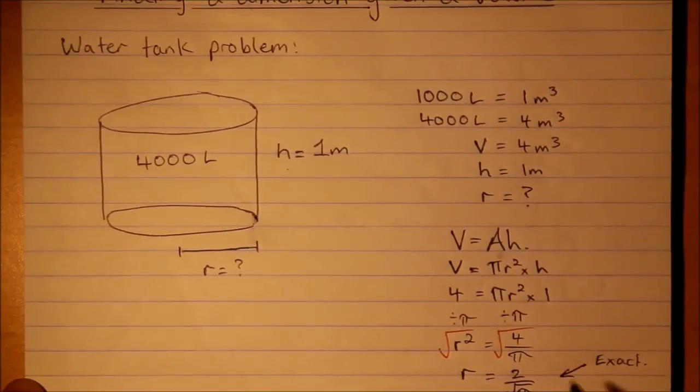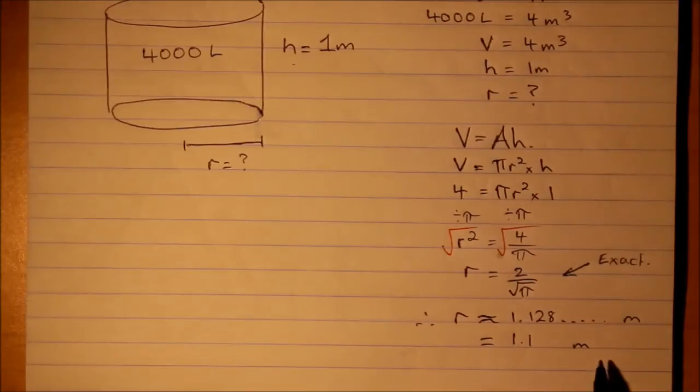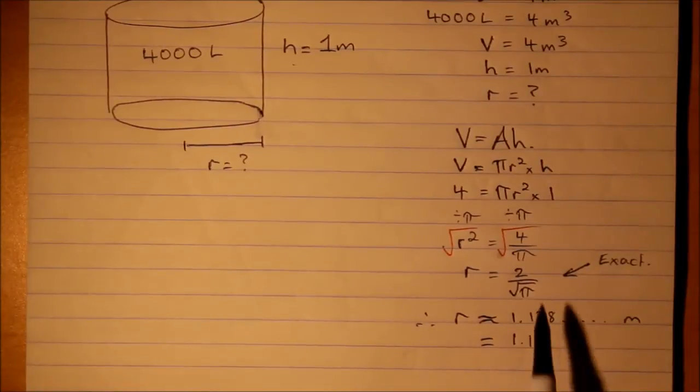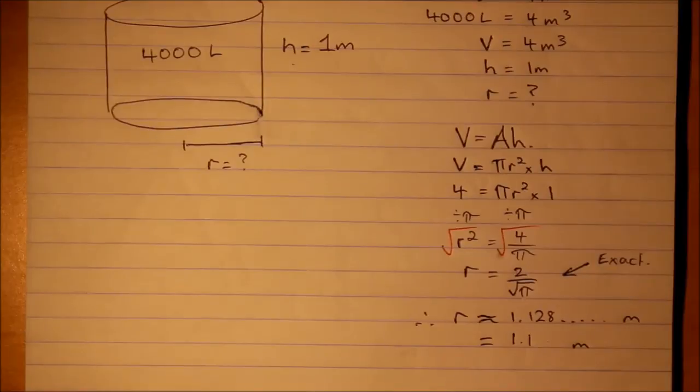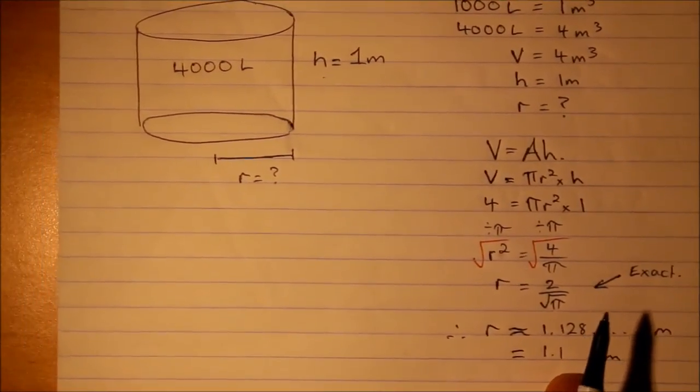Okay, to one decimal place, what do we get? What do you do when you get a number like this? Well it's very easy to make a mistake pressing buttons on the calculator. If you have time, test it. Test your answer.